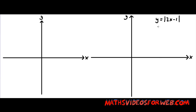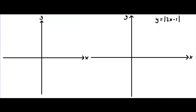Hi, in this video I'll be showing you how to create the graph of y equals the absolute value of 2x minus 1. In order to create this graph, we must first create the graph of y equals 2x minus 1. We should know that y equals 2x minus 1 is a line, because it is of the form y equals mx plus a constant.